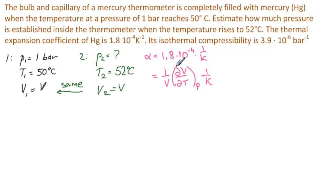On the other hand, this isothermal compressibility is usually denoted by beta. That's 3.9×10⁻⁶, 1 over bar. And you have to remember the minus here. It's 1 over V, delta V over delta P. The temperature is constant, and that's 1 over bar.